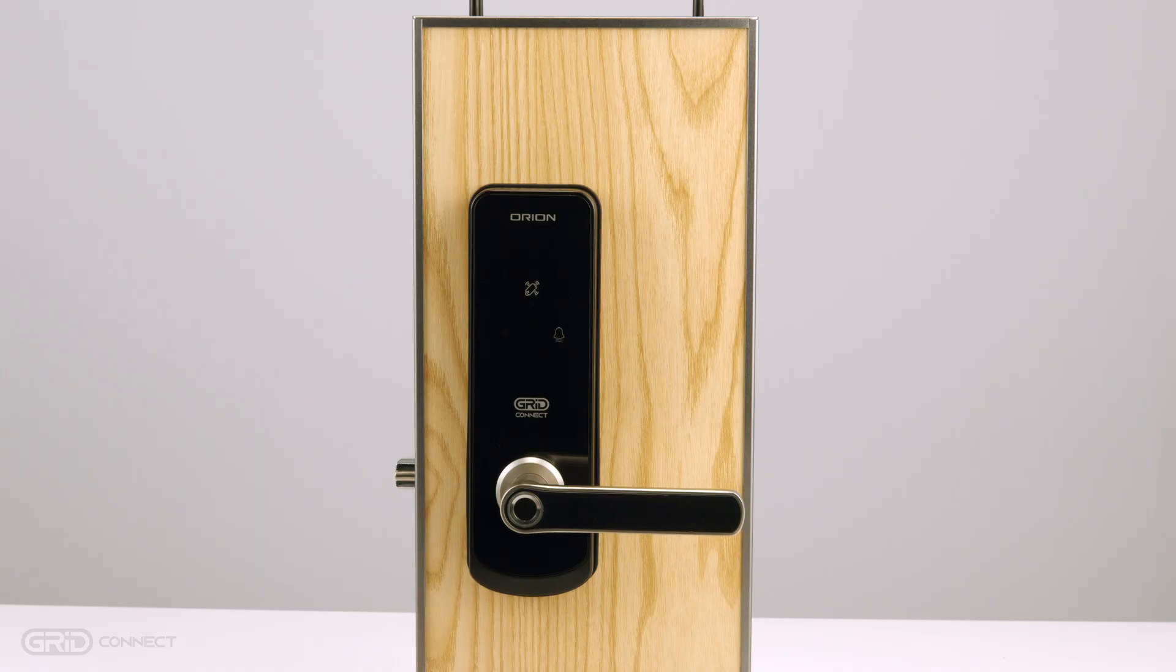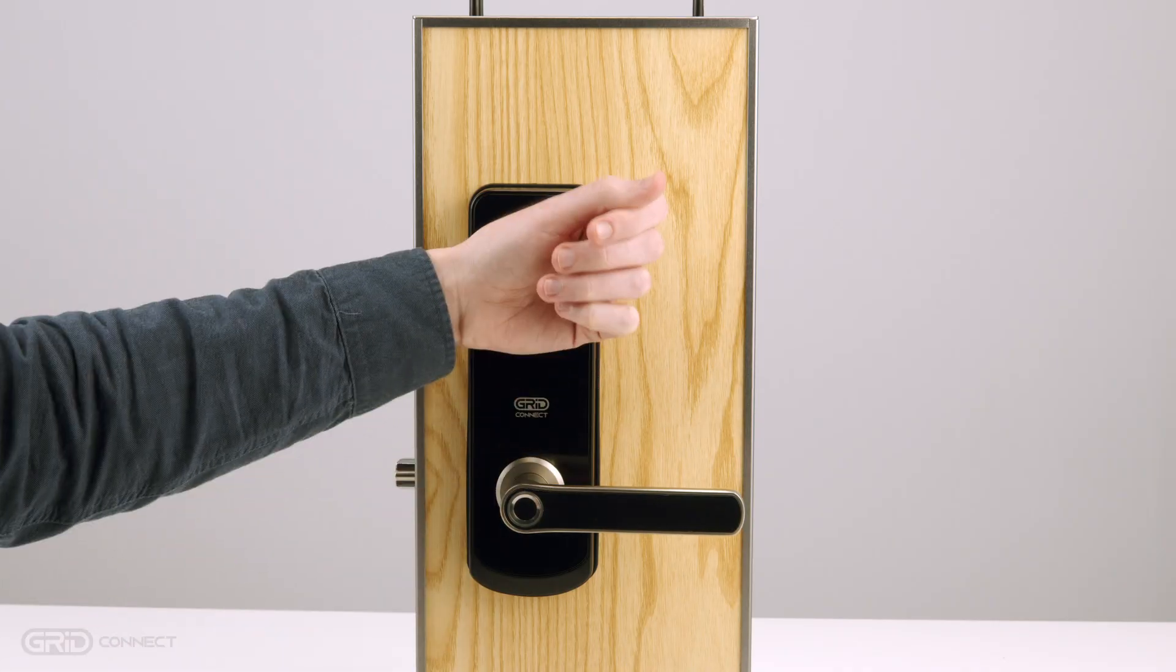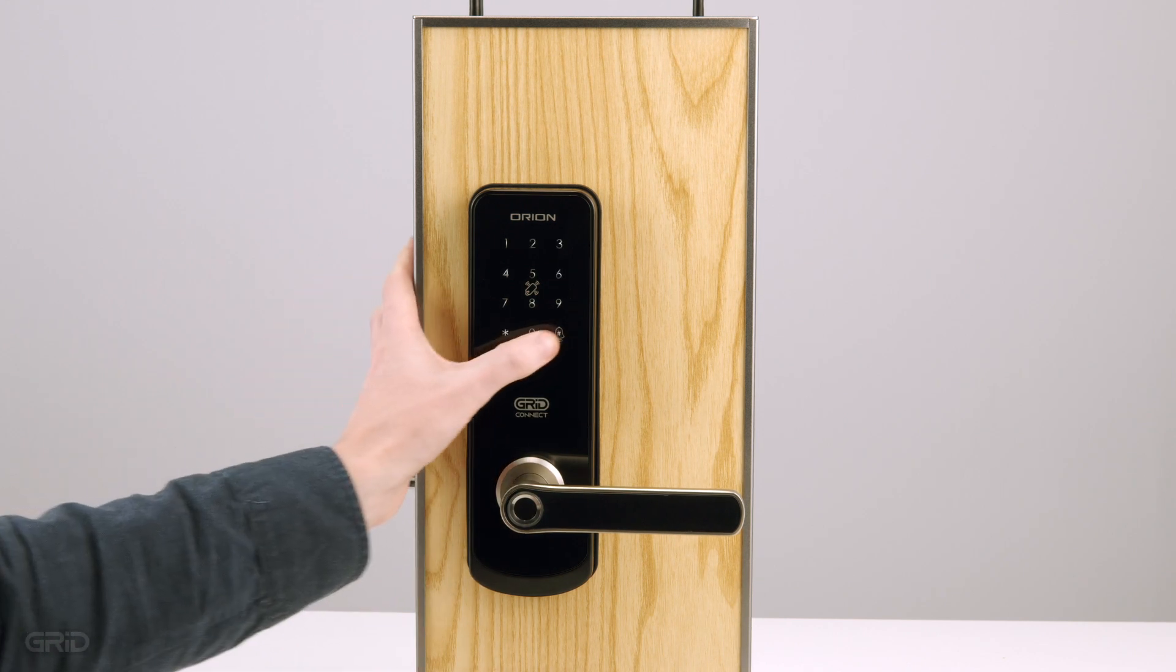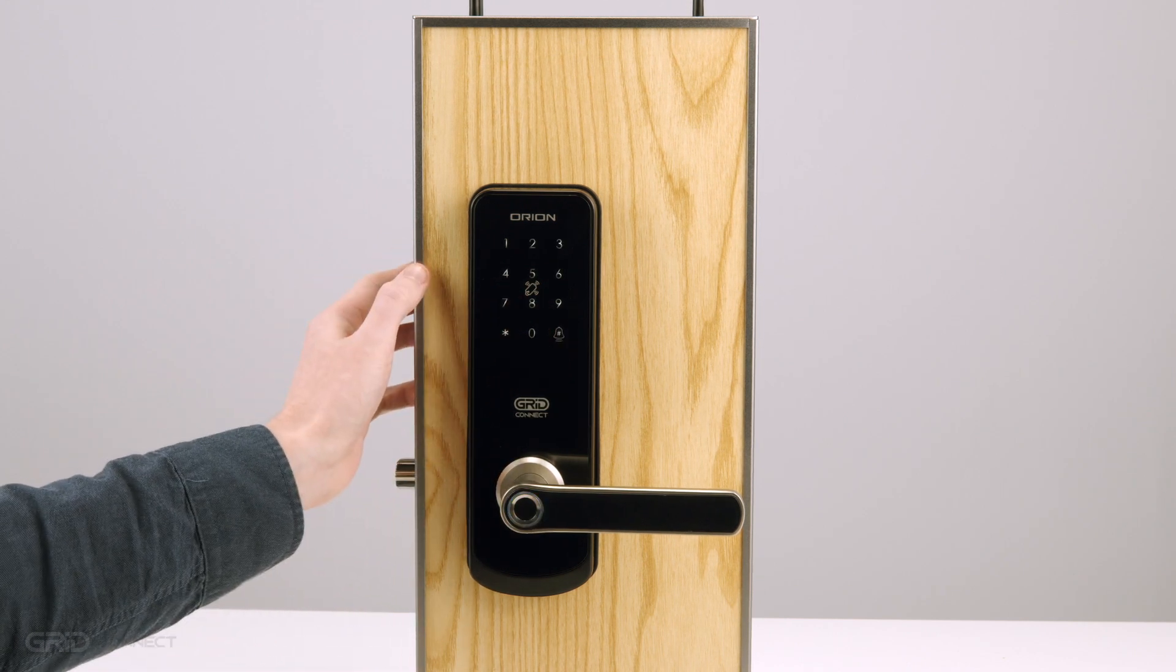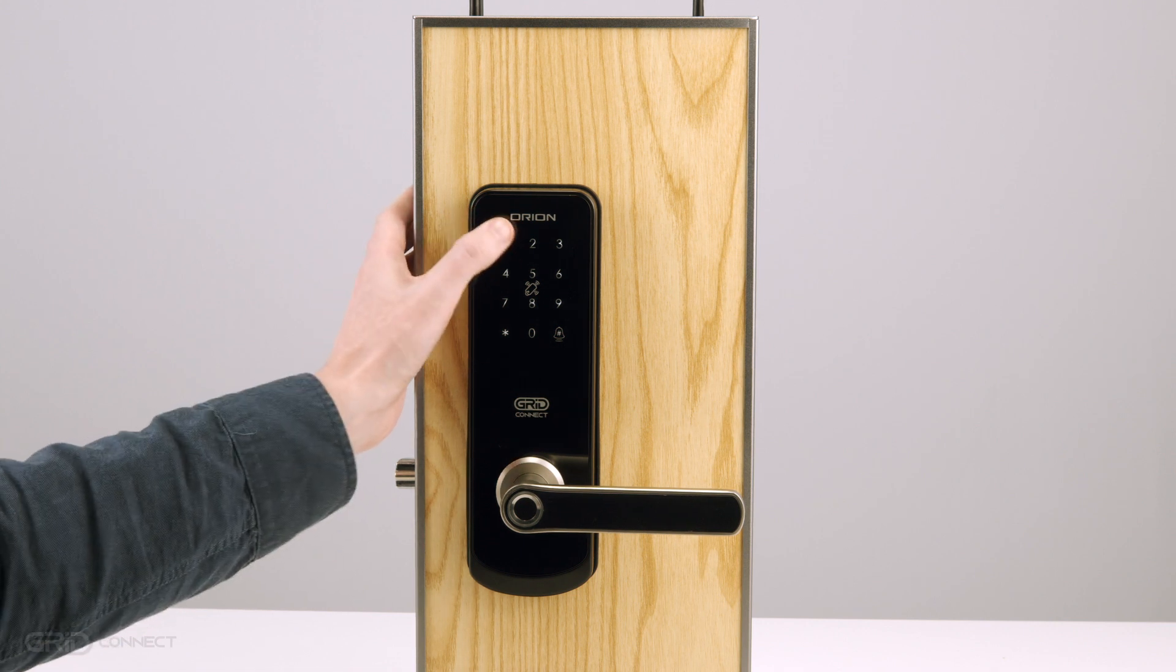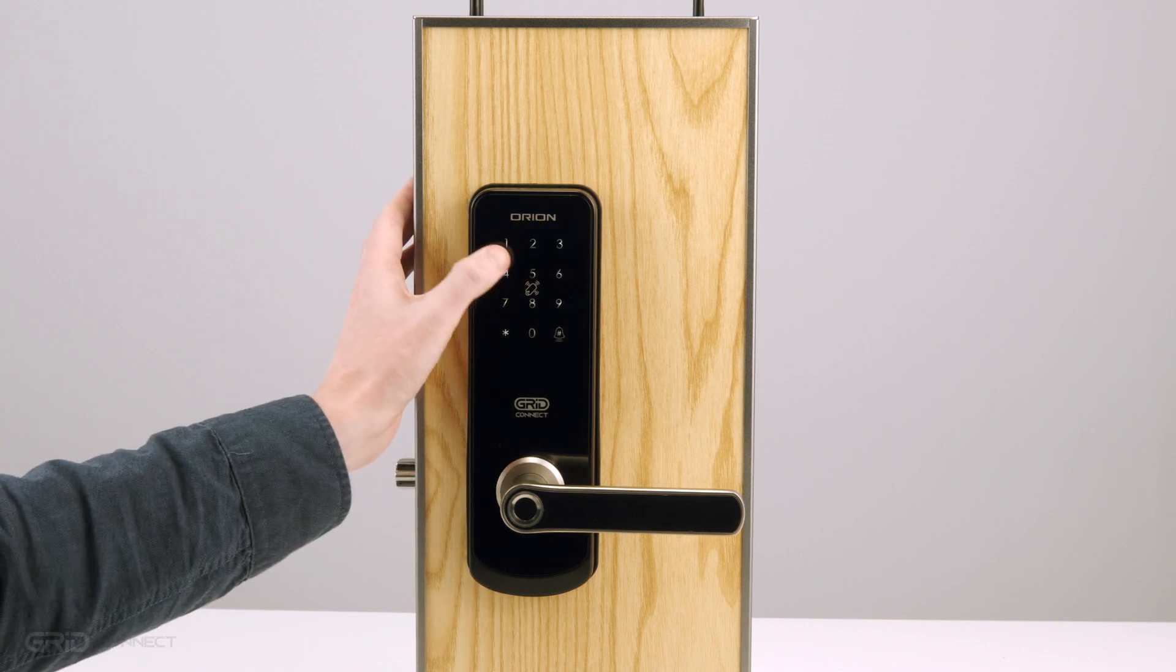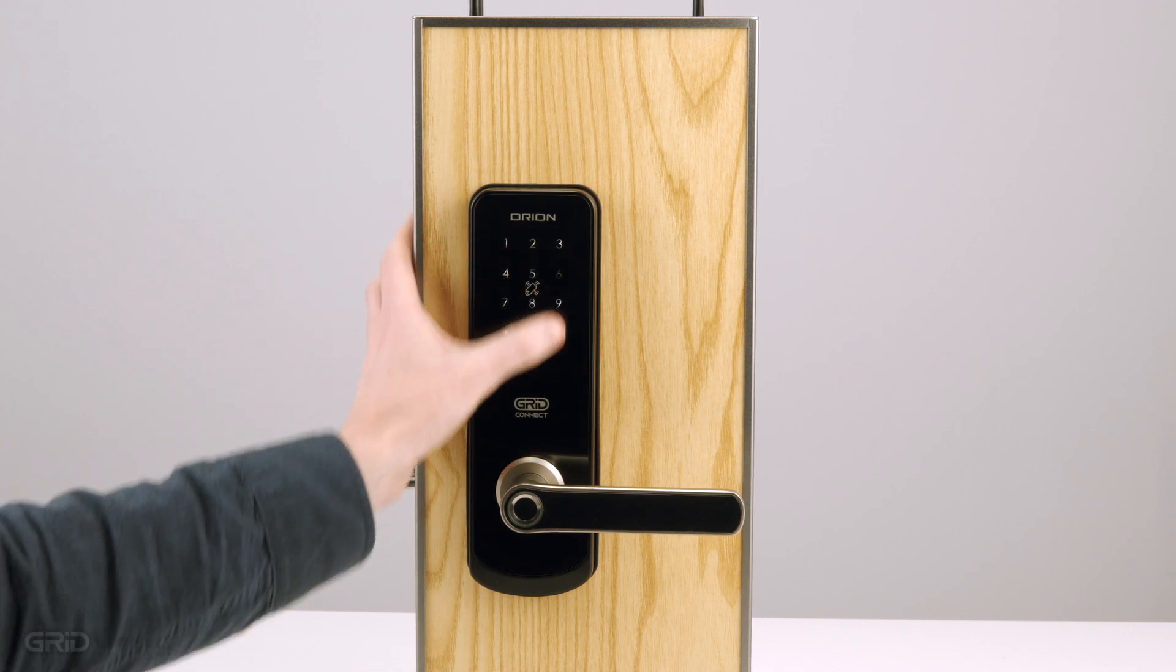Your smart lock is now in demo mode. To create an administrator, wake the device with the back of your hand. Press star followed by the hash key to enter the setup menu. The default administrator password is 123456 followed by the hash key.